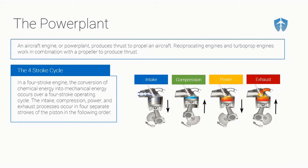Here is our piston, here's our cylinder. In the intake stroke, the intake valve opens and the fuel and air mixture is sucked down into the cylinder. Then you have the compression stroke — once the piston gets to the bottom, it comes back up and compresses that fuel and air mixture into a tight area. In both the compression and power stroke, the intake and exhaust valves are closed so that none of the fuel or air goes backwards.